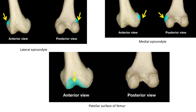Anteriorly, between the two condyles of the femur there is a smooth area covered by cartilage for articulation with the patella — this is called the patellar surface of the femur. The patellar surface is visible only anteriorly and not in posterior view.